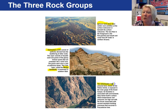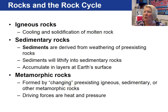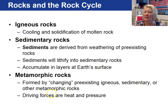Our last group is metamorphic rocks. This is the Vishnu Schist — what we call the basement crystalline rock at the bottom of the Grand Canyon. To summarize: igneous rocks form from the cooling and solidification of molten rock; sedimentary rocks form from the weathering of pre-existing rocks, which lithify and accumulate in layers at the Earth's surface; and metamorphic rocks form by changing pre-existing igneous, sedimentary, or other metamorphic rocks. The mechanisms of metamorphism are heat and pressure.